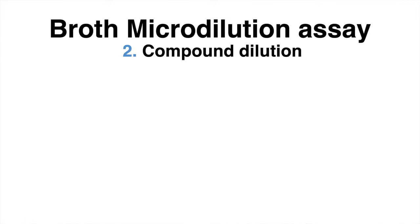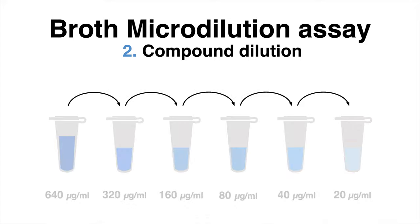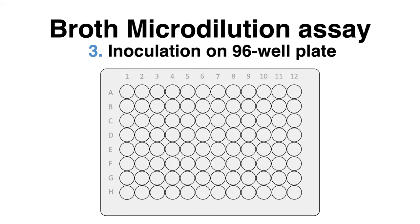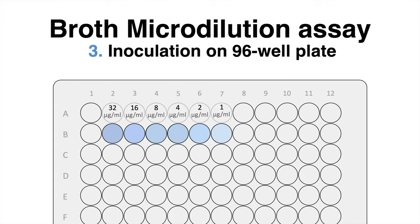In the second step, different dilutions of the drug are made, typically by preparing a serial dilution of a stock solution, as shown here. The different compound concentrations are then transferred into a 96-well plate.